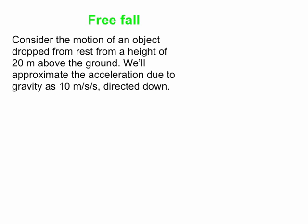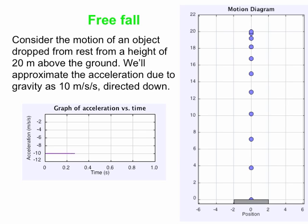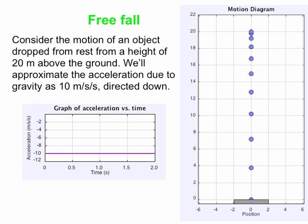Let's apply these in a particular example. Here's a situation where an object is simply dropped from rest from a very tall building, falling through a height of 20 meters to the ground. We approximate the acceleration due to gravity — the ball falls because the Earth acts on it via the force of gravity — at 10 meters per second squared directed downward. The acceleration graph looks like this: the acceleration is constant at minus 10 meters per second squared, shown as a horizontal line on the graph.